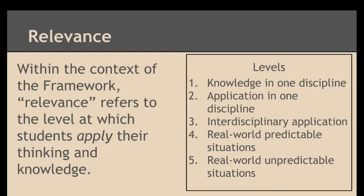Moving on to relevance — within the context of the framework, relevance refers to the level at which students actually apply their thinking and knowledge. Along the bottom continuum, there are two quadrants but five different levels. Rigor is designing instruction to make students think in more complex ways at higher levels of Bloom's. Relevance, on the other hand, is what allows students to actually connect to what they're doing.